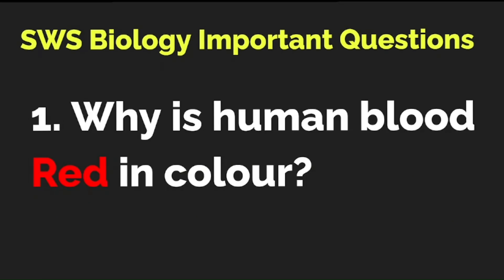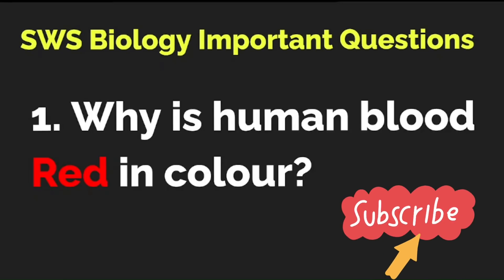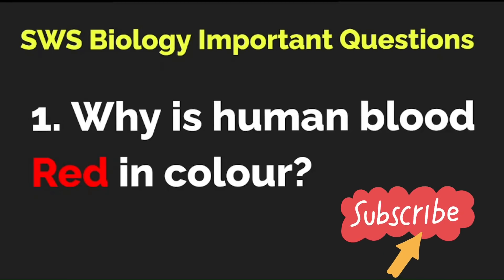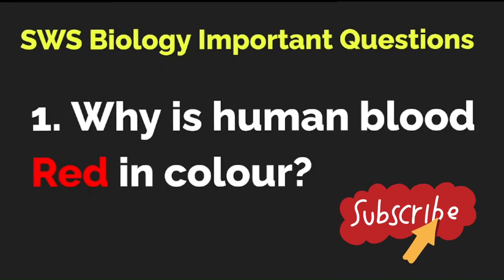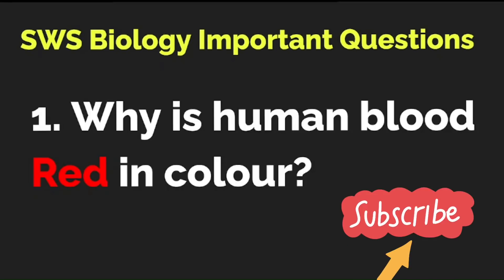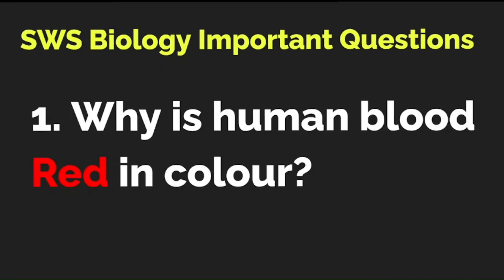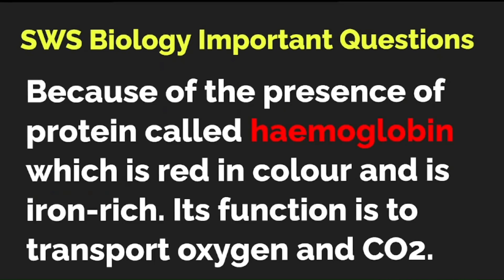These are not MCQs. I am going to give you the question, give you time to think about it, and write your answer in the comment section. SWS Biology Important Question Number One: Why is human blood red in color? Think about it and write your answer. The correct answer: because of the presence of a protein called hemoglobin, which is red in color and is iron-rich. Its function is to transport oxygen and carbon dioxide.